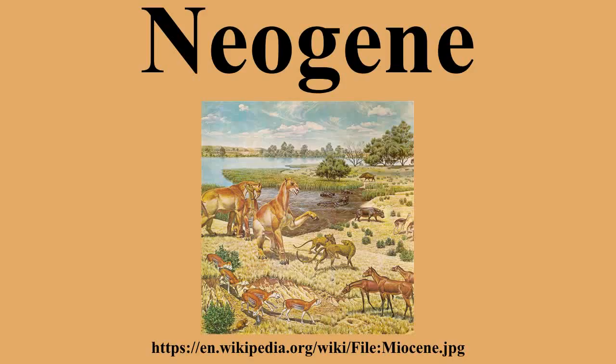The Neogene traditionally ended at the end of the Pliocene epoch, just before the older definition of the beginning of the Quaternary period. However, there was a movement amongst geologists to also include ongoing geological time in the Neogene, while others insist the Quaternary to be a separate period of distinctly different record. The somewhat confusing terminology and disagreement amongst geologists on where to draw hierarchical boundaries is due to the comparatively fine divisibility of time units as time approaches the present, and due to geological preservation that causes the youngest sedimentary geological record to be preserved over a much larger area and to reflect many more environments than the older geological record.